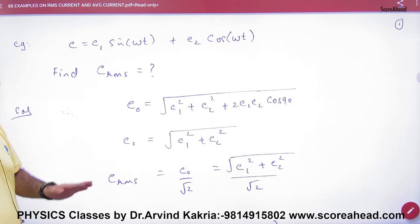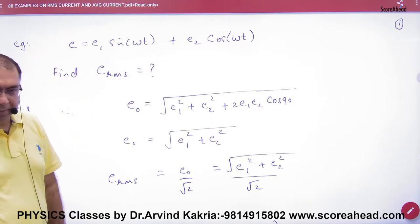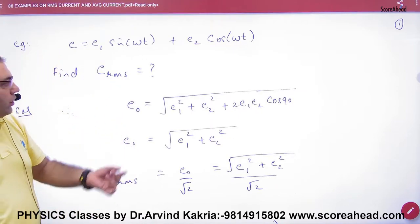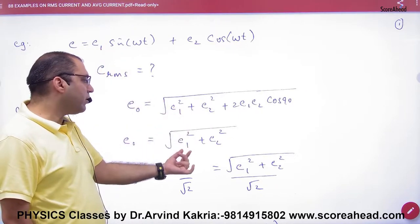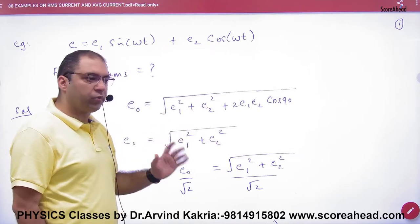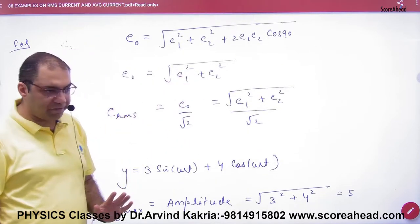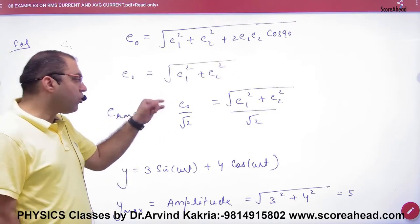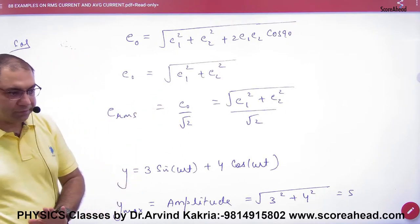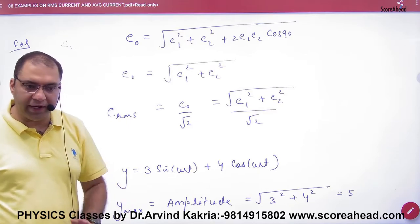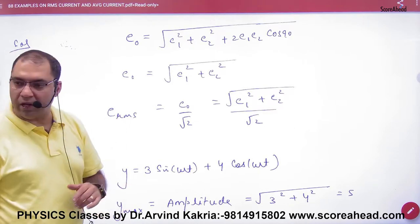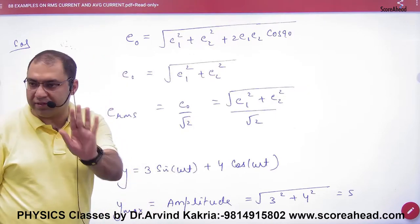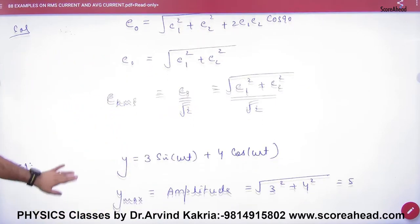The same method applies for EMF. If E1 and E2 are the coefficients, to find maximum EMF: under root of sin coefficient squared and cos coefficient squared. If asked for RMS, then maximum EMF divided by √2. So we divide √(E1² + E2²) by √2 to get RMS value.